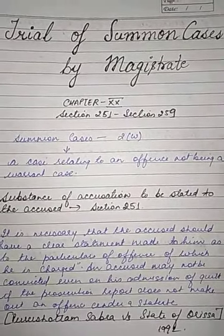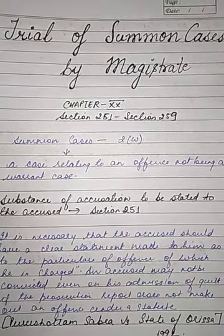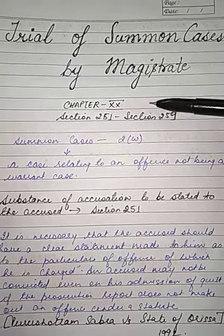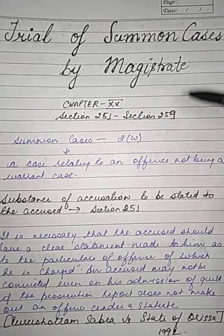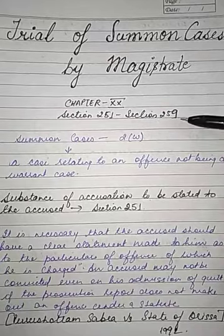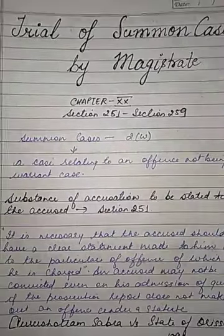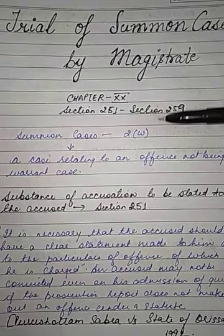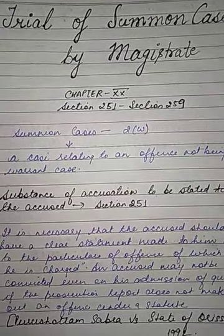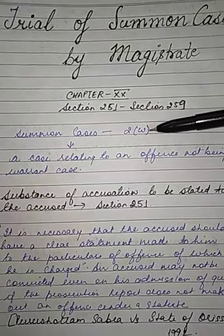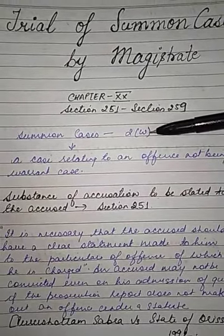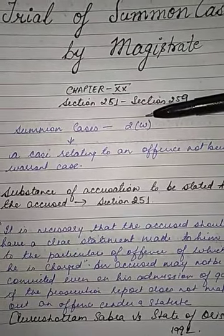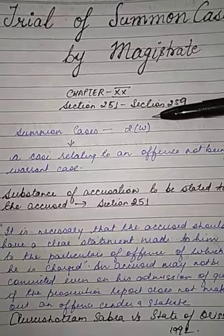Trial of Summon Cases by Magistrate is given in Chapter 20 of the CRPC. Chapter 20 covers Trial of Summon Cases by Magistrate, and it covers sections 251 to 259. The word 'Summon Cases' has been defined — or rather, defined in the negative sense — in Section 2(w) of the CRPC.